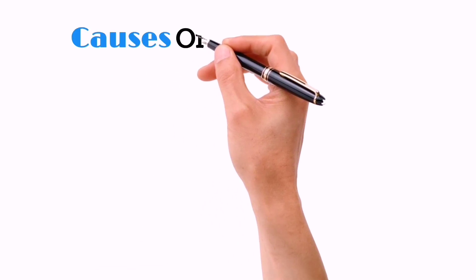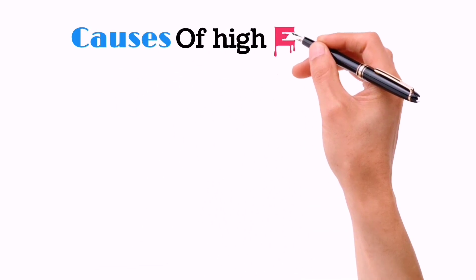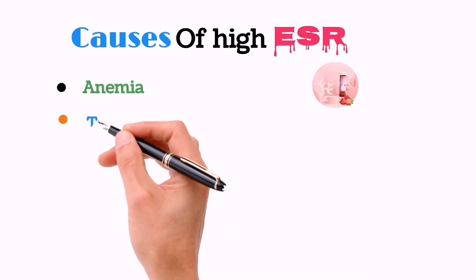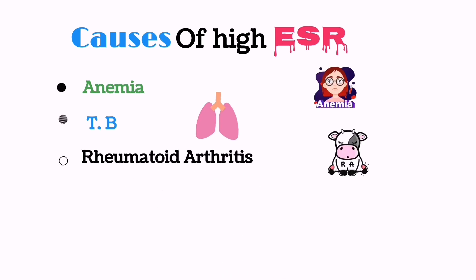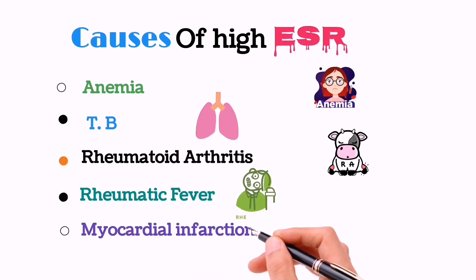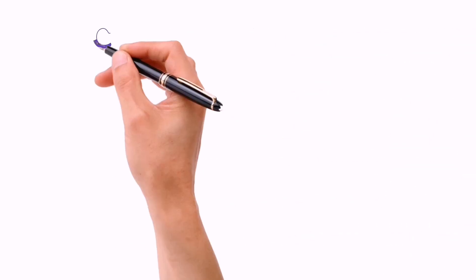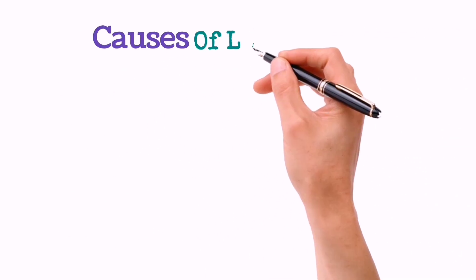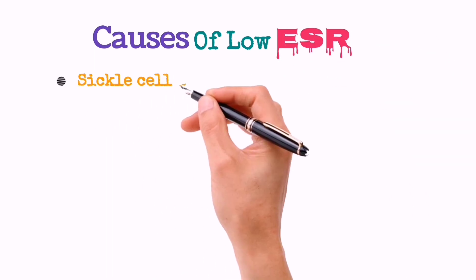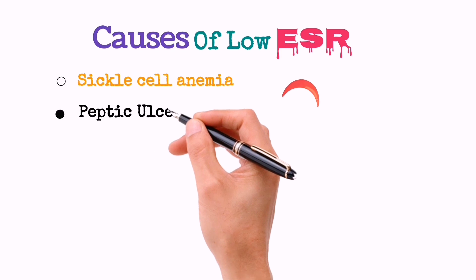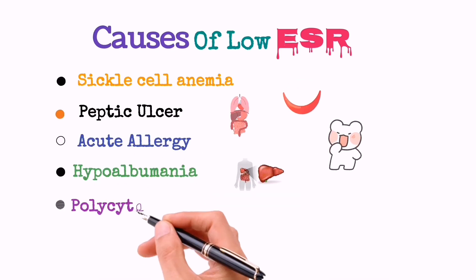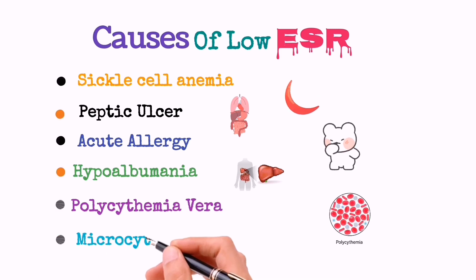Now let's talk about some causes of high ESR value. These include anemia, tuberculosis or TB, rheumatoid arthritis, rheumatic fever, myocardial infarction, etc. Causes of low ESR value include sickle cell anemia, peptic ulcer, acute allergy, hypoalbuminemia, polycythemia vera, and microcytosis, etc.